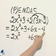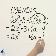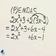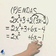But the 3 and the minus 4, having no letters, are like terms. The final answer is 2x squared plus 6x minus 1.